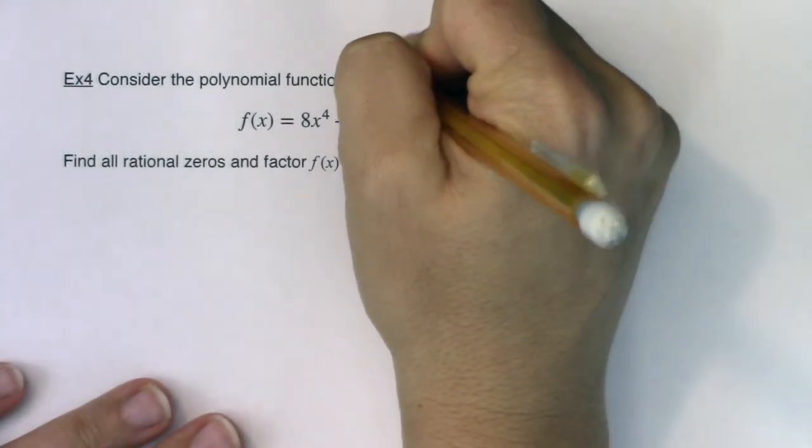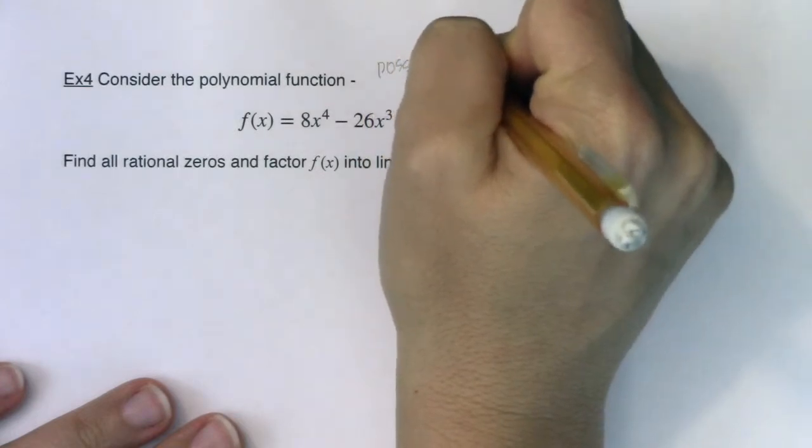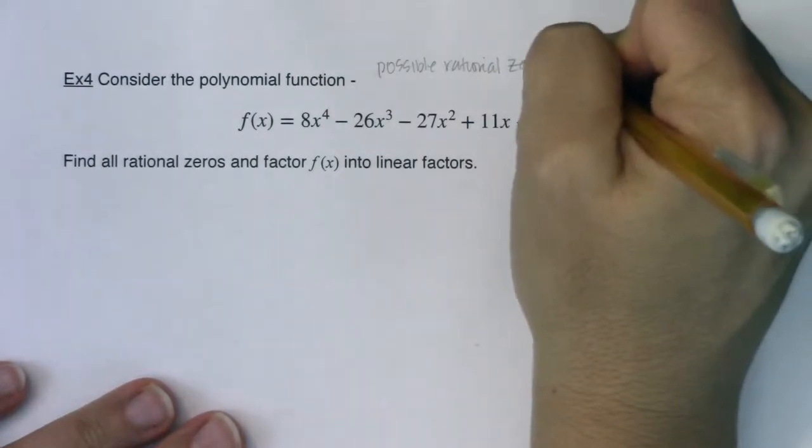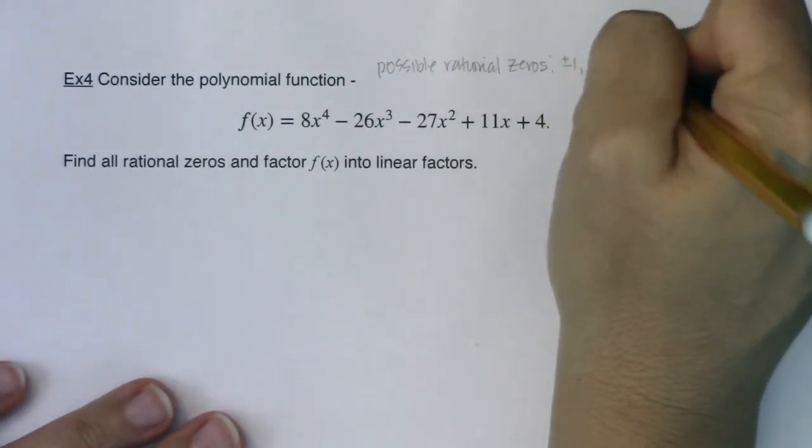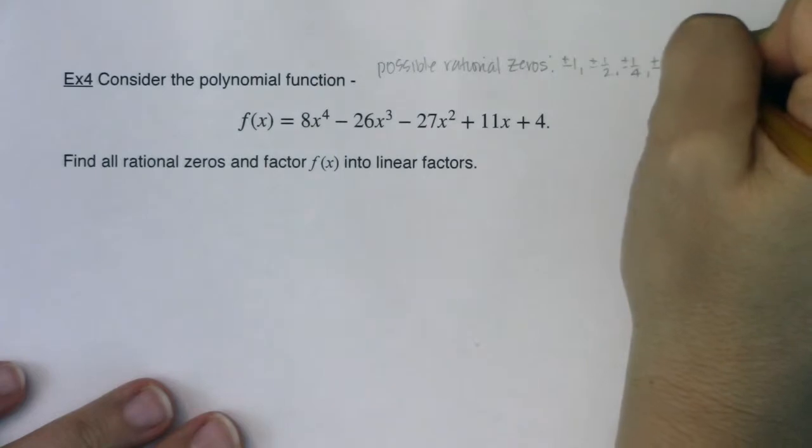So as of example three, our possible rational zeros, we had a pretty long list. It was plus or minus one, we had one half, we had one fourth, we had one eighth, and we had a two and we had a four.